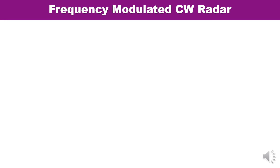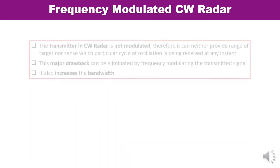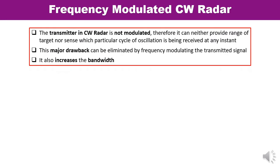Now let us talk about the frequency modulated CW radar. The transmitter in a CW radar is not modulated, which means it can neither provide the range of the target nor sense which particular cycle of oscillation is being received at any instant of time. This was the major drawback, which can be eliminated if frequency modulation is applied to the transmitted signal. At the same time, applying FM to the CW radar also increases the bandwidth.